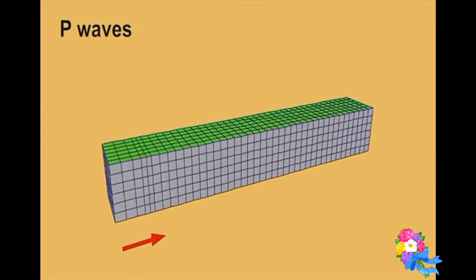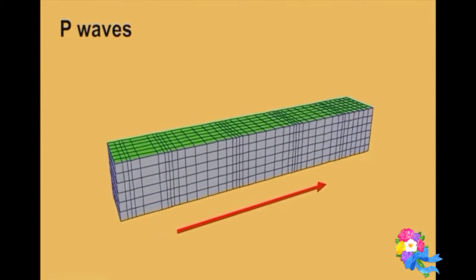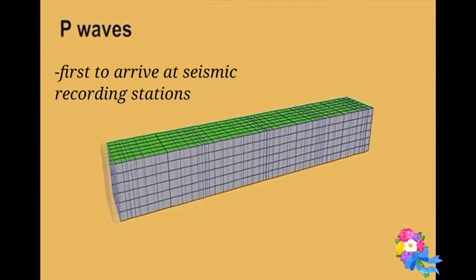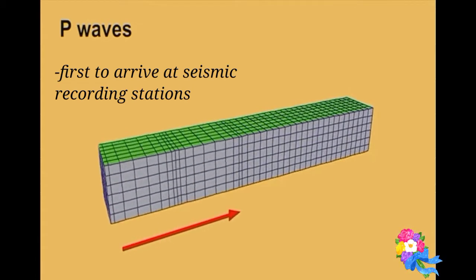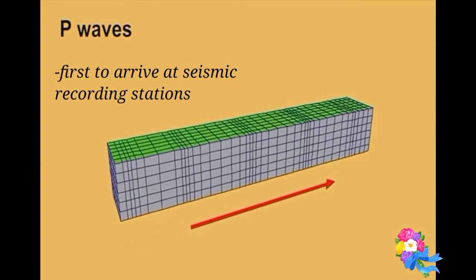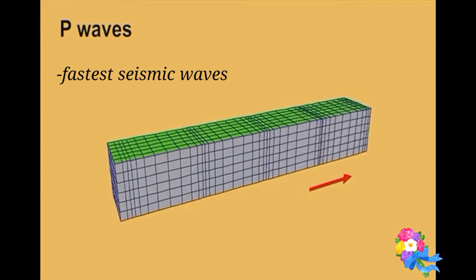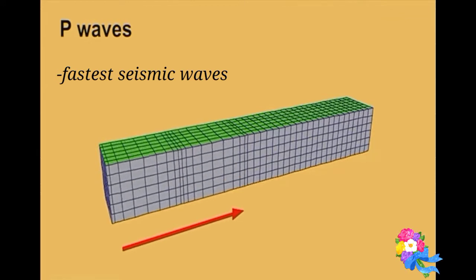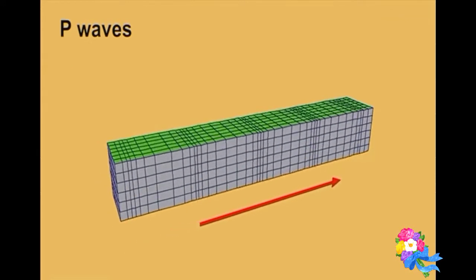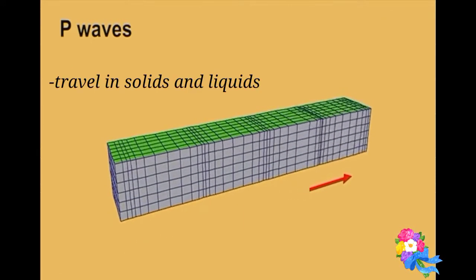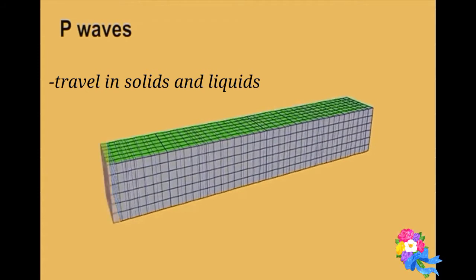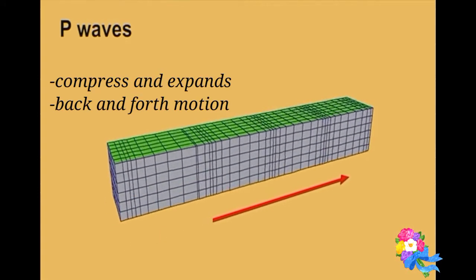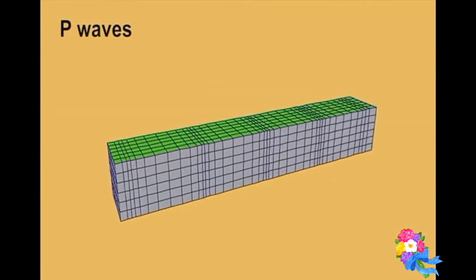Primary waves, or P waves, are called primary waves because they are the first type of wave to arrive or first to be detected at seismic recording stations. These waves are also the fastest seismic waves, and that's the reason kung bakit ito yung waves na unang nadedetect ng seismograph. The primary waves can travel through solids and liquids, and they compress and expand, moving back and forth in the direction of the travel of the wave.